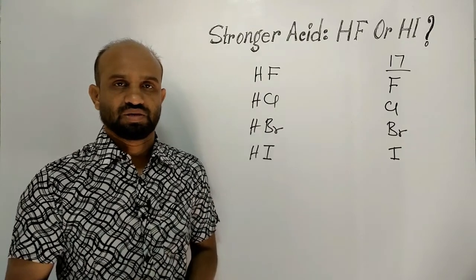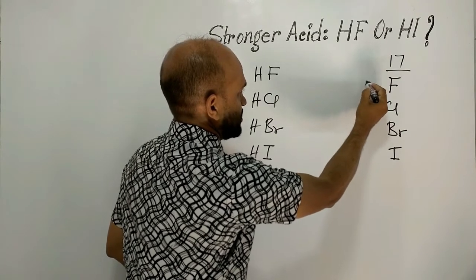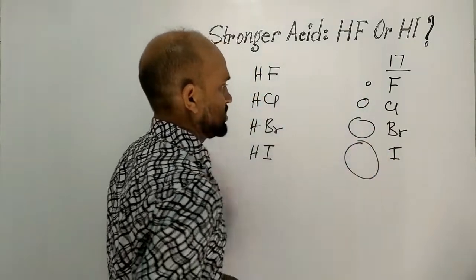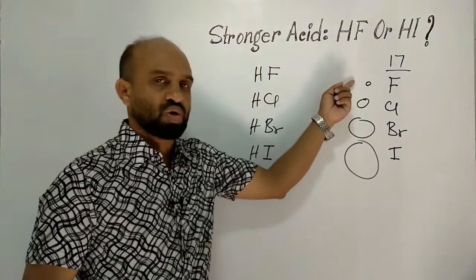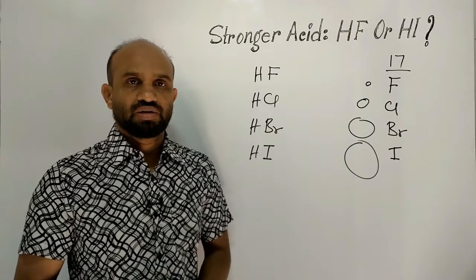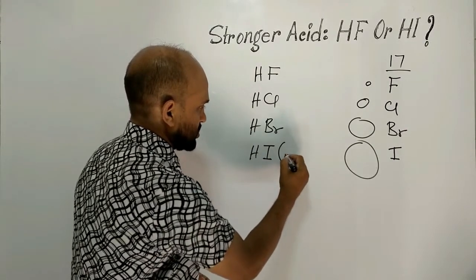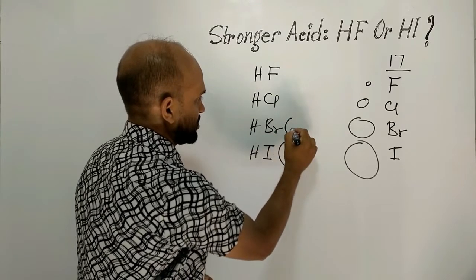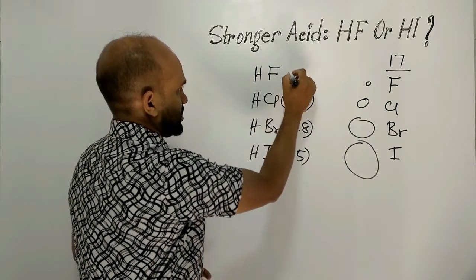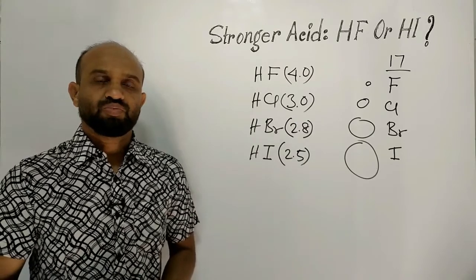One thing we know: in the periodic table, from top to bottom, atomic sizes increase. The atomic size of fluorine is the smallest, then chlorine, then bromine, and iodine is the largest. Now let's write the electronegativity values of halogens: iodine 2.5, bromine 2.8, chlorine 3.0, and fluorine 4.0.